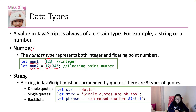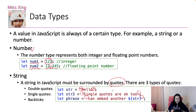The second one is a string. A string in JavaScript must be surrounded by quotes, and there are three types of quotes. One is a double quote, the other one is a single quote, and the last one is a back tick, which is the key on the keyboard before the number one. Inside JavaScript, you can use all of these ways to represent a string.